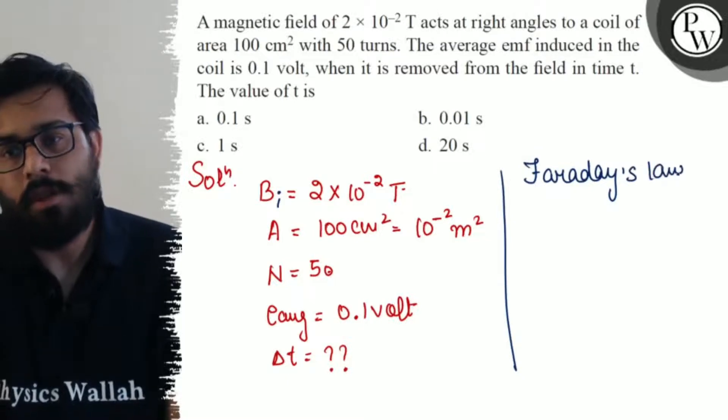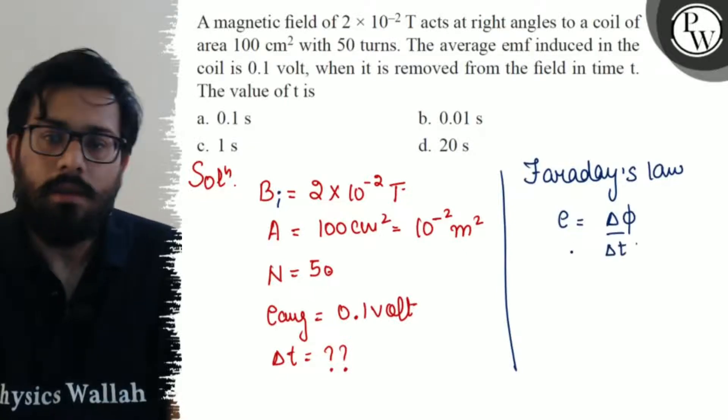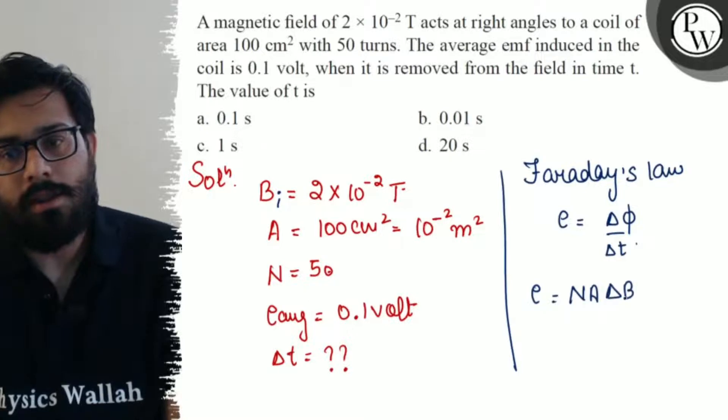e = ΔΦ/Δt, so e can be written as N × A × ΔB/Δt.